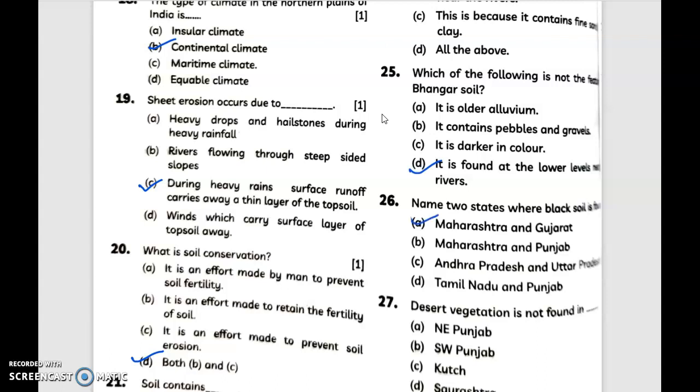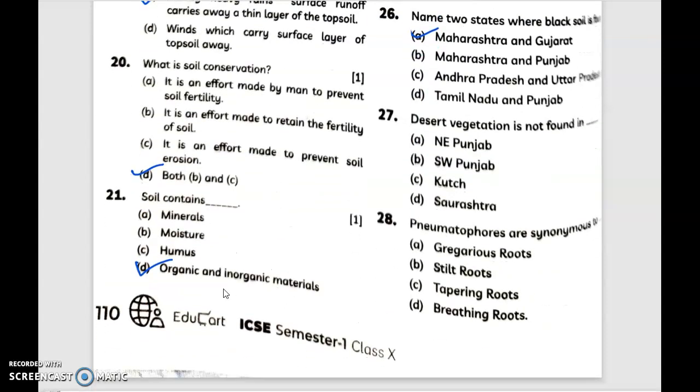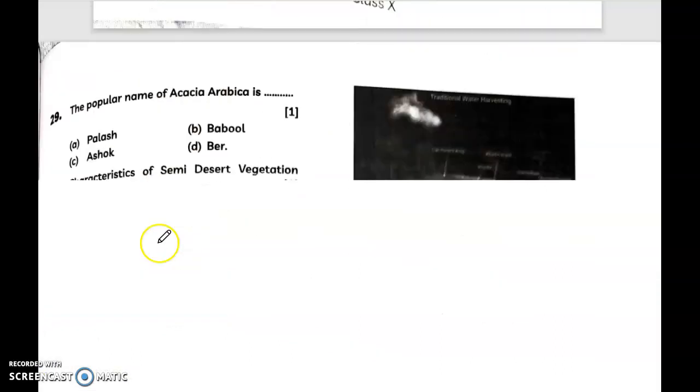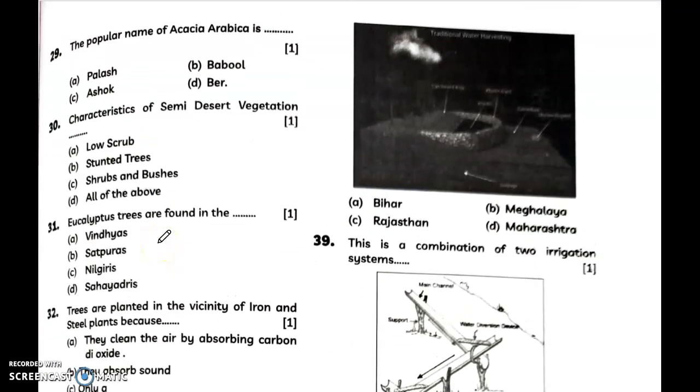Name two states where black soil is found - answer is Maharashtra and Gujarat. Desert vegetation is not found in answer A, northeast Punjab. Pneumatophores are synonymous to answer option D, breathing roots. The popular name of Acacia arabica is answer option B, babul.